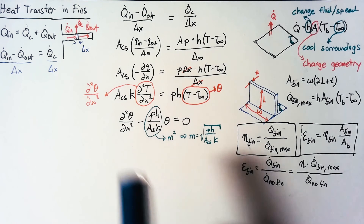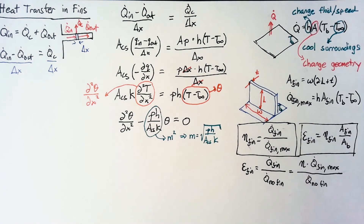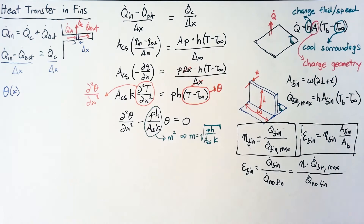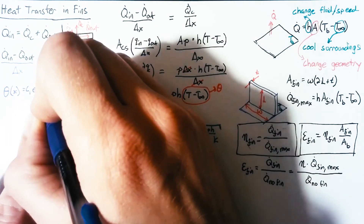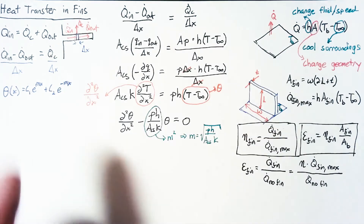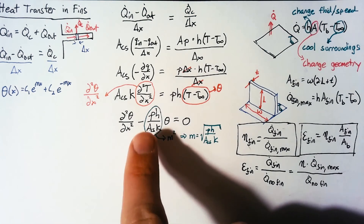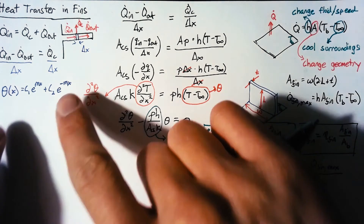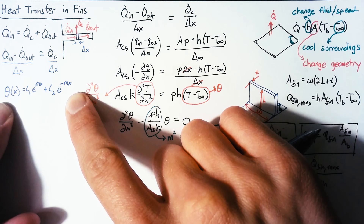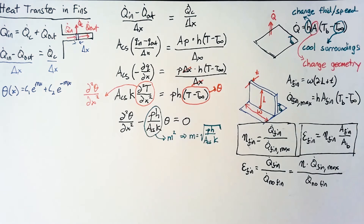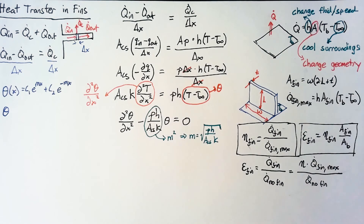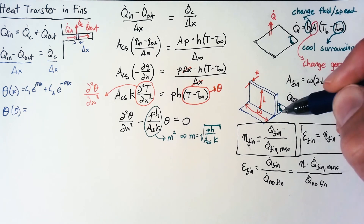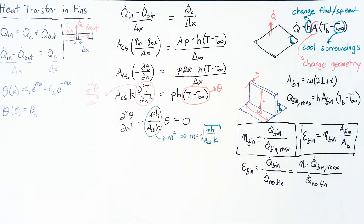Once we reach this point, there is a simple ODE solution: θ(x) = C₁ e^(mx) + C₂ e^(-mx). This is the general solution. To get a specific solution we need boundary conditions. The first boundary condition is the temperature at x = 0: θ(0) = θ_B, which is just the difference between the base temperature T_B and the surrounding temperature.